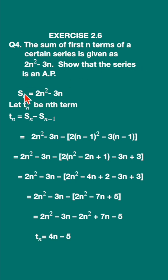In this sum they have given us Sn, that is the sum of the first n terms. It is equal to 2n square minus 3n. Let us now take Tn to be the nth term.